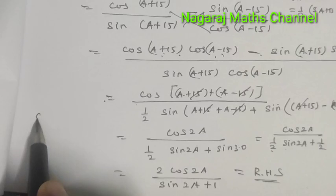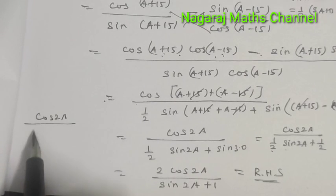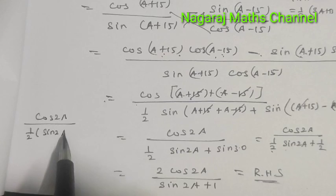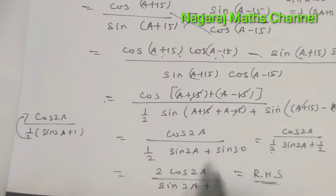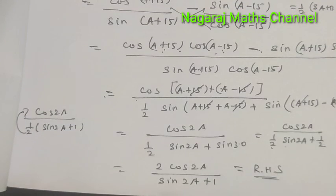Now taking 2 out from the denominator, we get 4cos(2A) divided by 2sin(A) + 1, which equals RHS. Thank you.